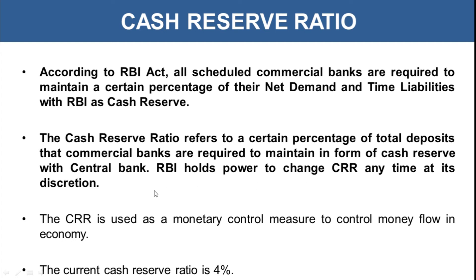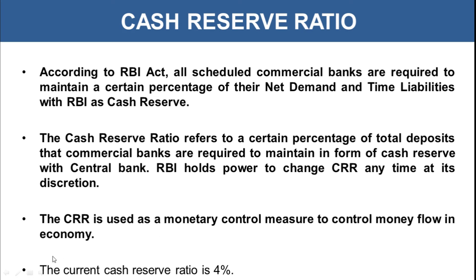RBI holds the power to change CRR at any time at its discretion. It keeps changing the CRR rate as and when required to control the money supply in the economy. The CRR is used as a monetary control measure. If money flow in the economy is huge, RBI tends to increase the CRR rate. With an increased rate, banks would have a lesser amount to give as credit, and thus the money flow in the economy would automatically reduce, and vice versa.